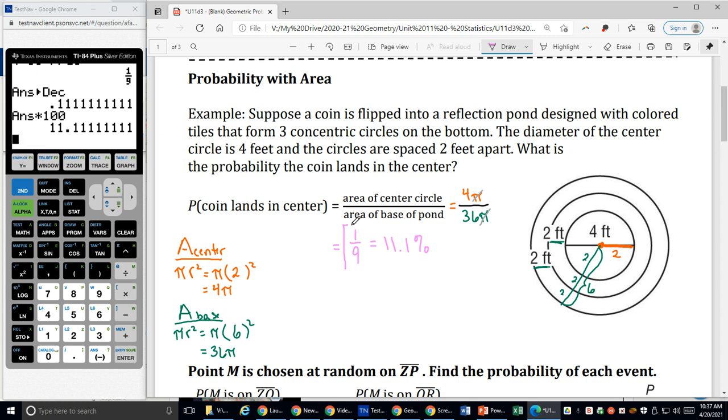Which is, as a decimal times 100, is 11.1%. That is the probability that if I just randomly toss that coin, like I turn around, I'm not even looking at it and I just throw it over my shoulder back into the pond. It's going to be one out of nine times it lands in the center or 11.1%. Now, if I'm facing the pond and I'm looking at the center of the pond and I'm aiming for the center of the pond, that percentage is going to change. This is based on randomly throwing that coin into the pond.